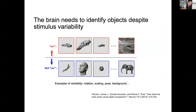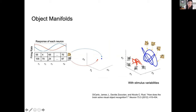The motivation comes from invariant object recognition and the fact that we're able to recognize objects despite the immense amount of variabilities that exist in the stimulus space, like size, orientation, position, or background context. And from the perspective of the neural population, this becomes the problem of object manifolds. More specifically, if a set of neurons are responding to two different objects and these neurons are tuned differently — for example, a dog versus a cat — they become two points in this high-dimensional neural vector space.